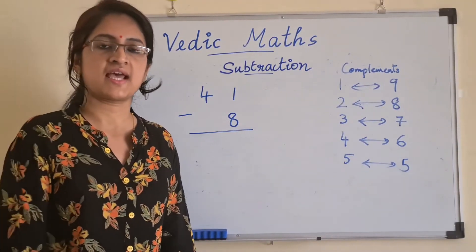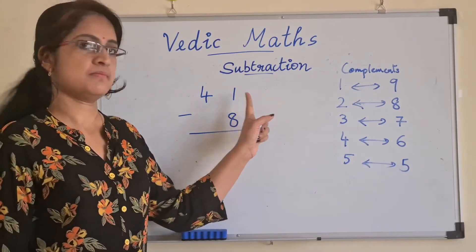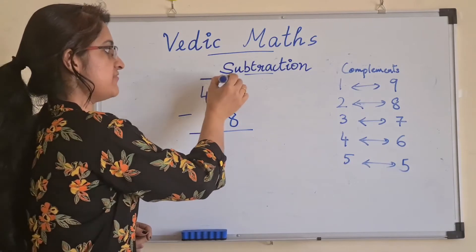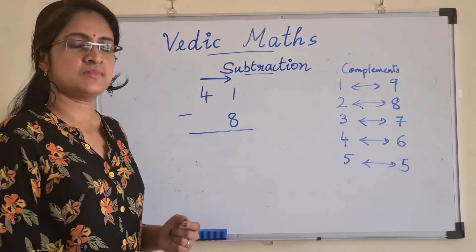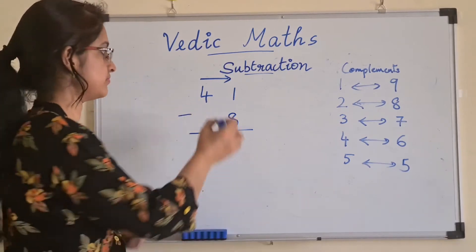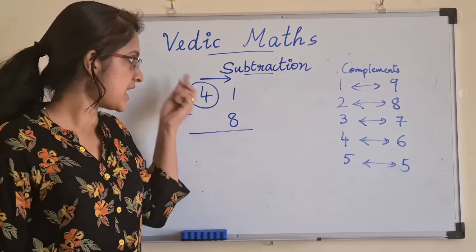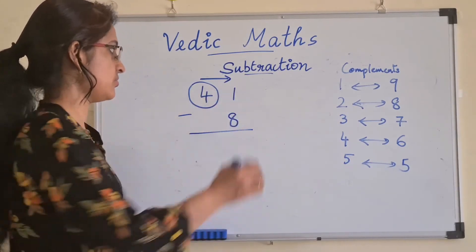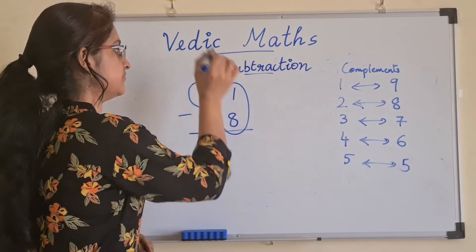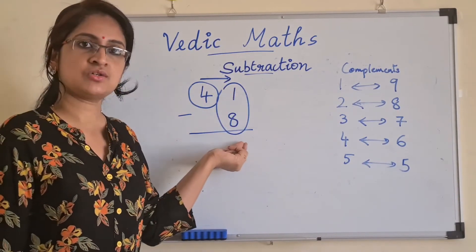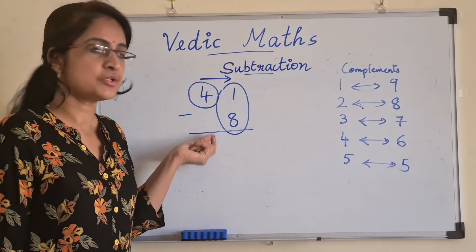We are going to subtract 41 minus 8. We are moving from left to right. The first digit we take is 4. The next step when we move from left to right is 1 minus 8. Since this is a mismatch combination, what do you do with 4?